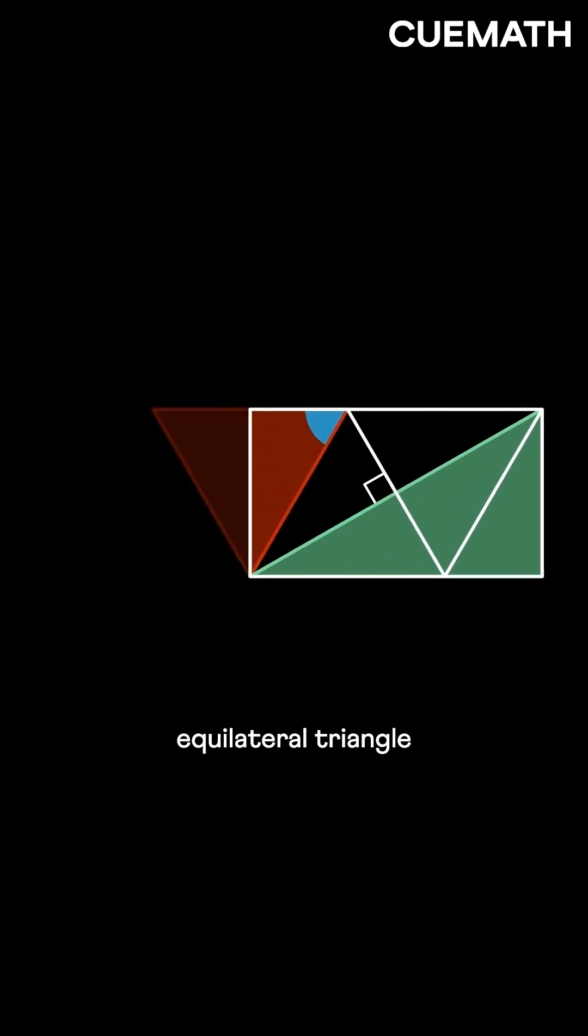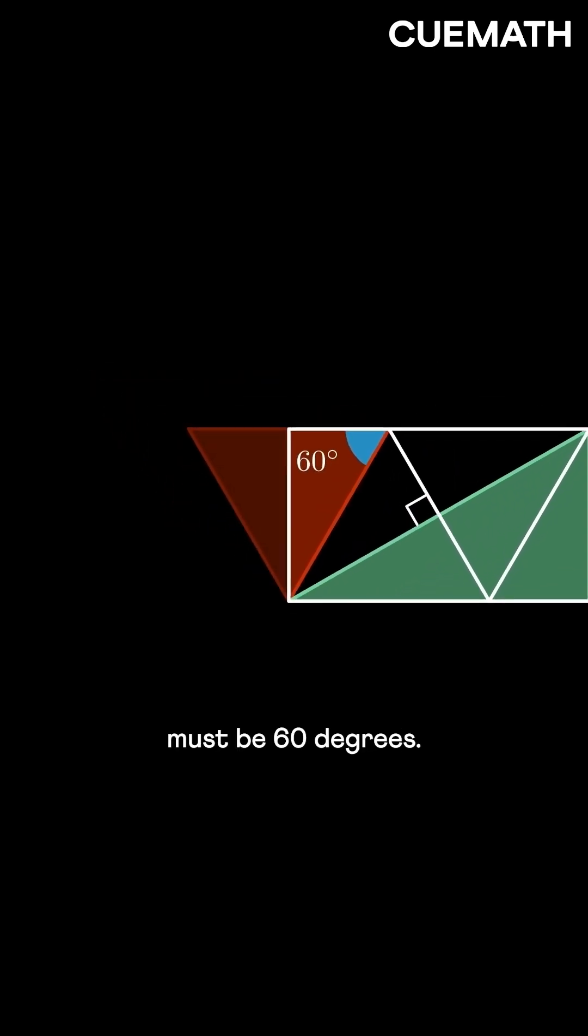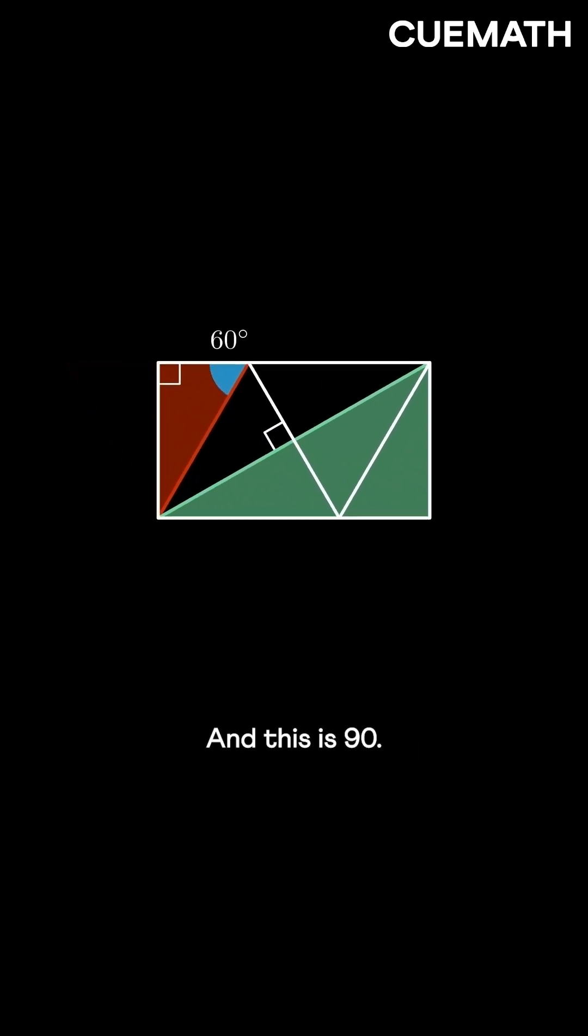This angle of the equilateral triangle must be 60 degrees. And this is 90. So this must be 30 degrees. Same for the angles in this triangle.